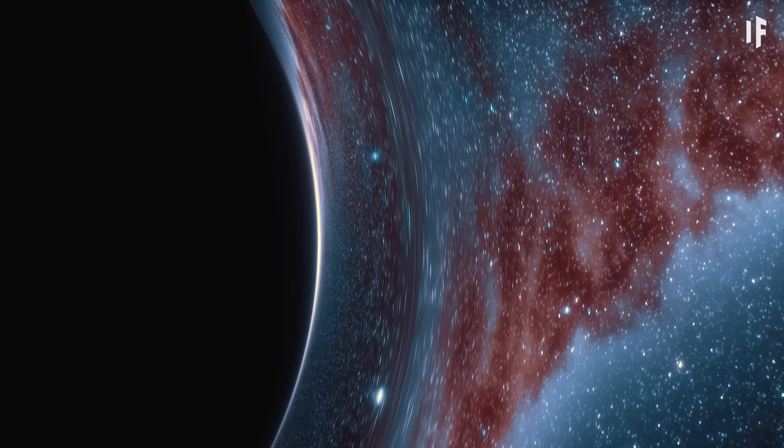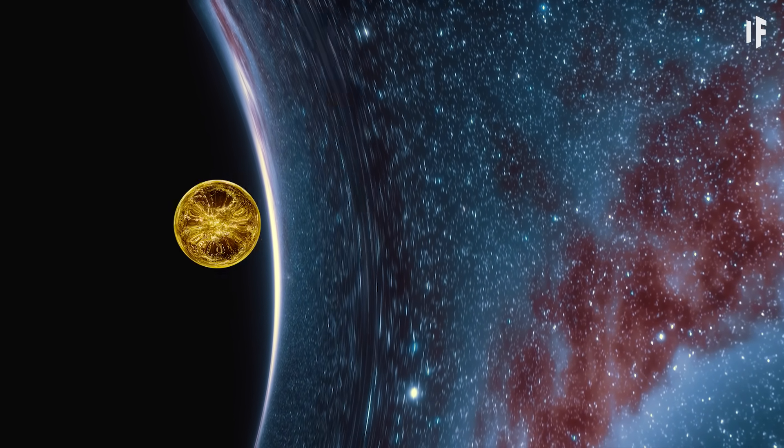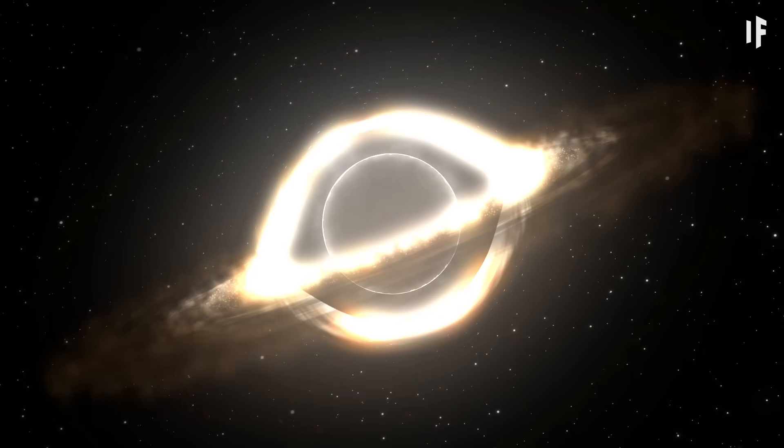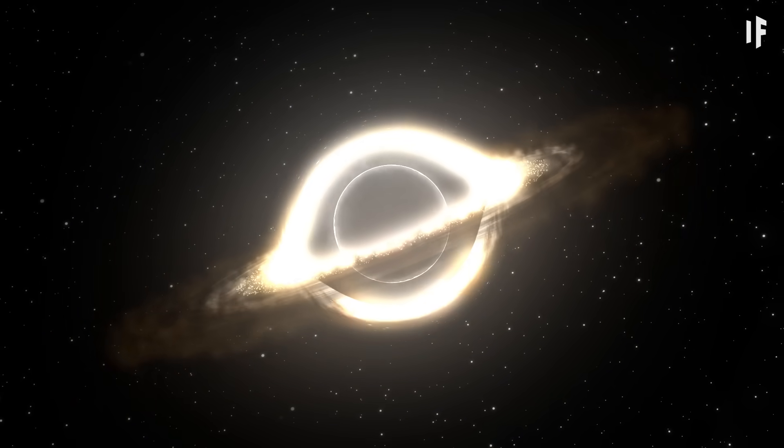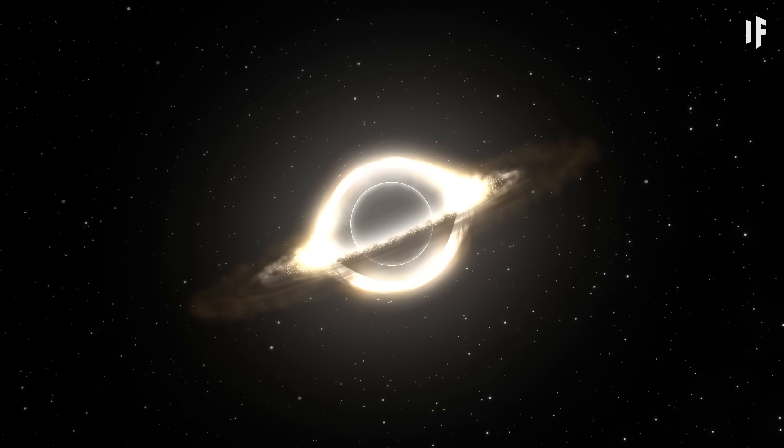But in the case of our black hole, one particle might go into the hole, and the other particle might escape into space. As this happens over time, the black hole becomes a teeny tiny bit smaller. And if we wait a few trillion years, the entire black hole will dissipate this way.